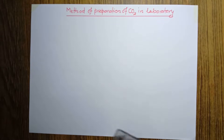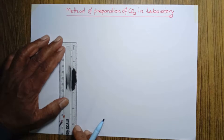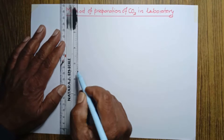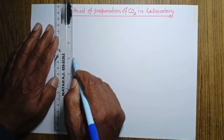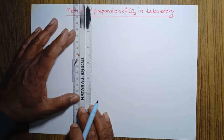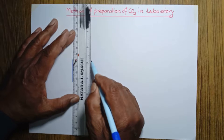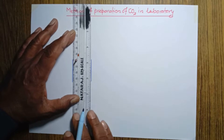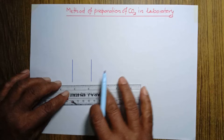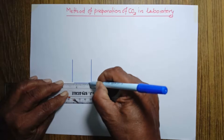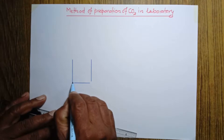Look at this diagram. In the method of preparation of carbon dioxide in the laboratory, first we will use a wolf bottle. A wolf bottle — it has two mouths at the top. I am making this wolf bottle.